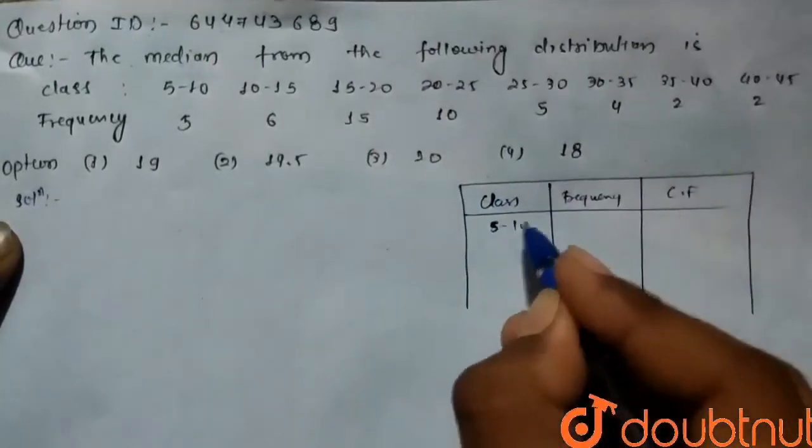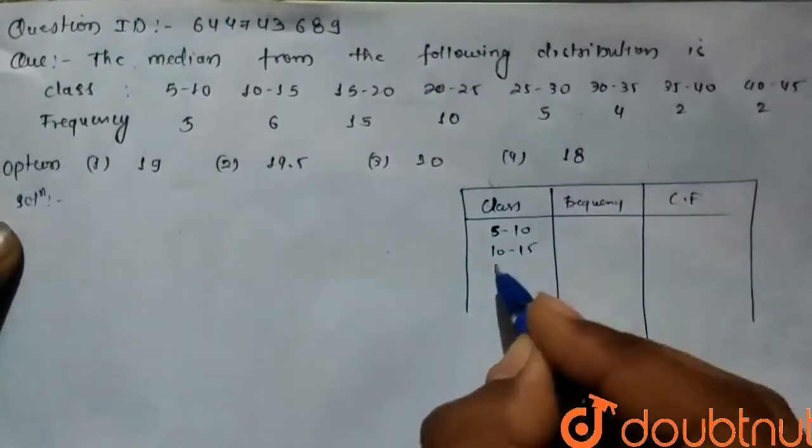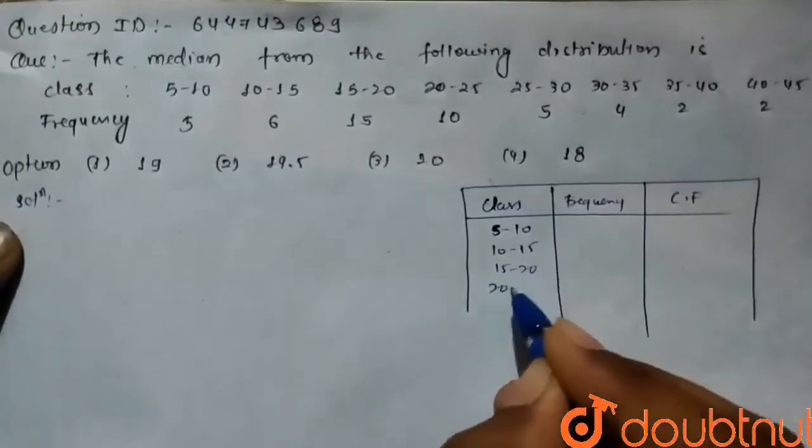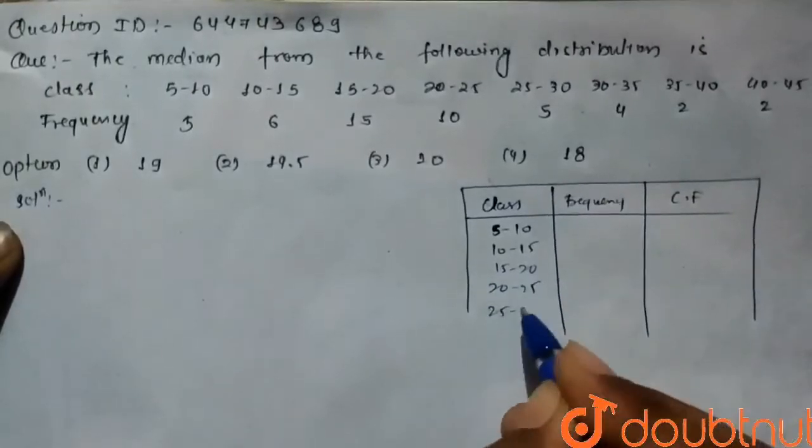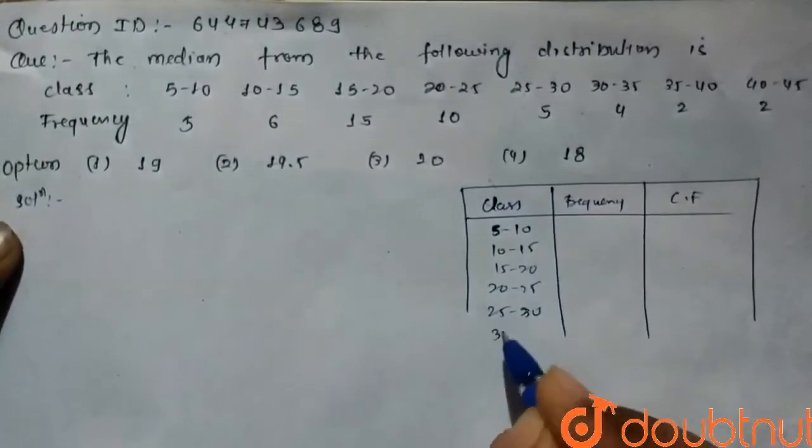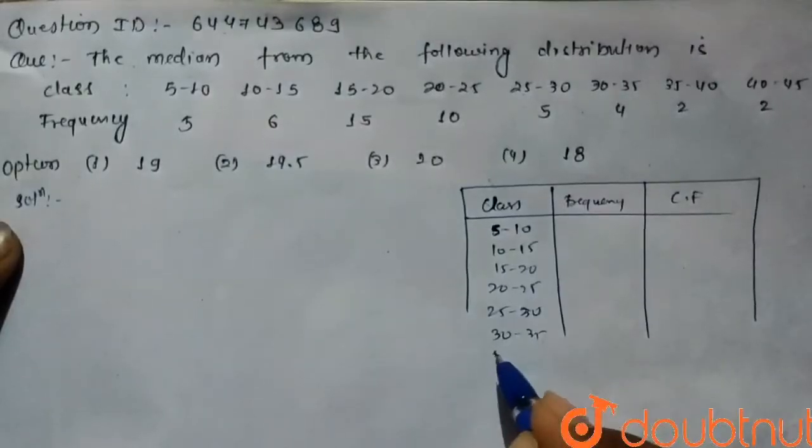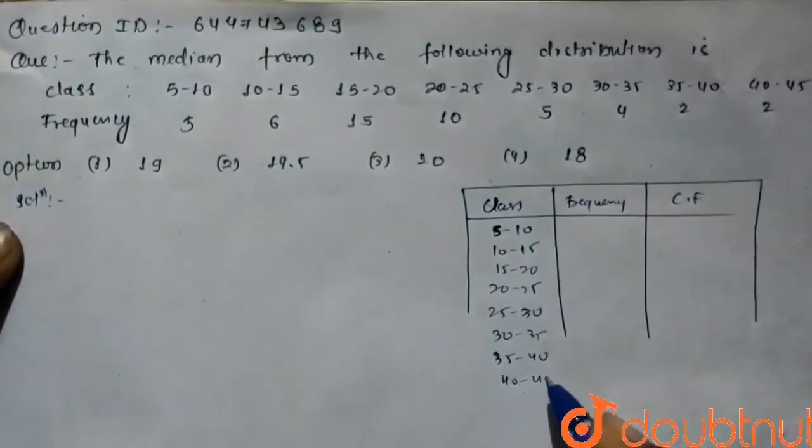So from 5 to 10, 10 to 15, 15 to 20, 20 to 25, 25 to 30, 30 to 35, 35 to 40 and 40 to 45.